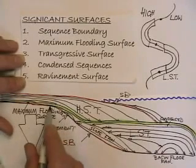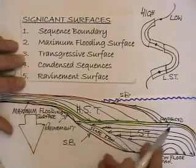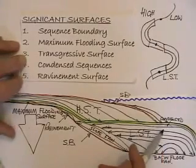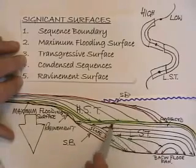And the transgressive surface, which represents the first transgression over the shelf margin. The condensed sequence may contain fauna, which are very useful to identifying the ages of these sequences.